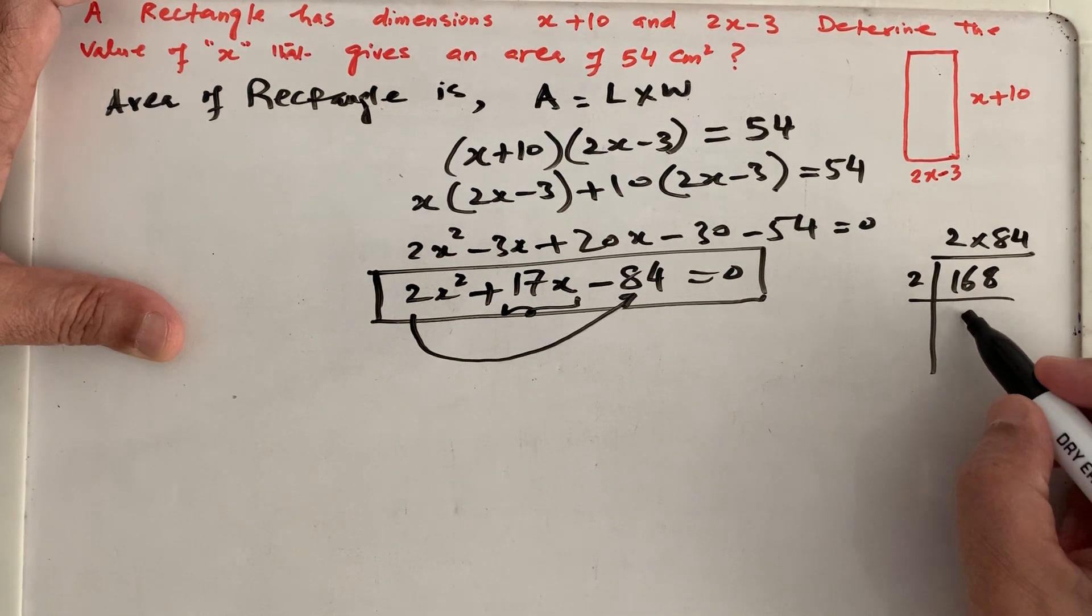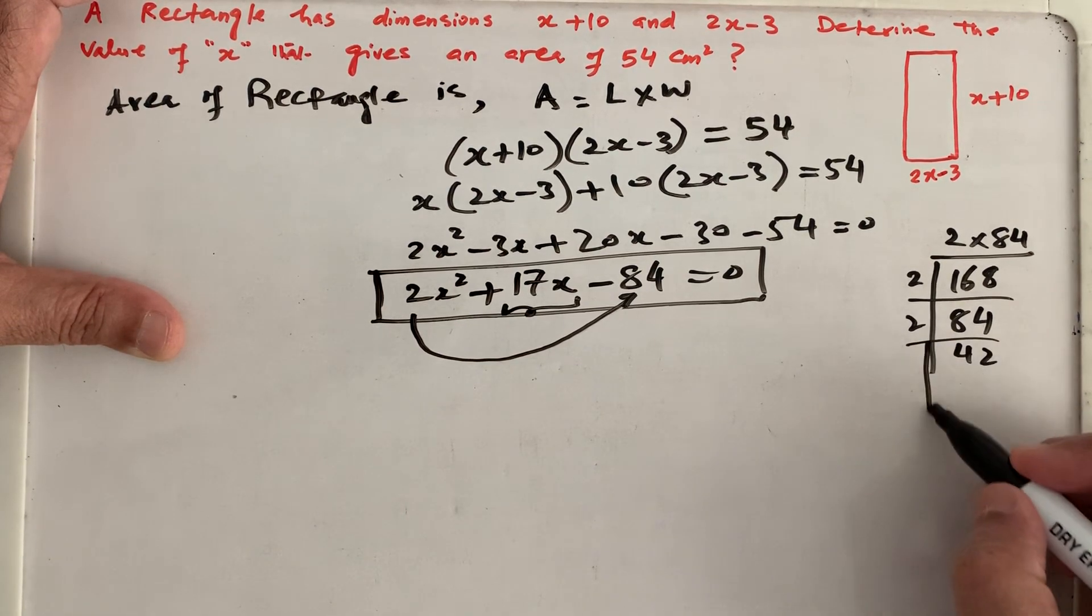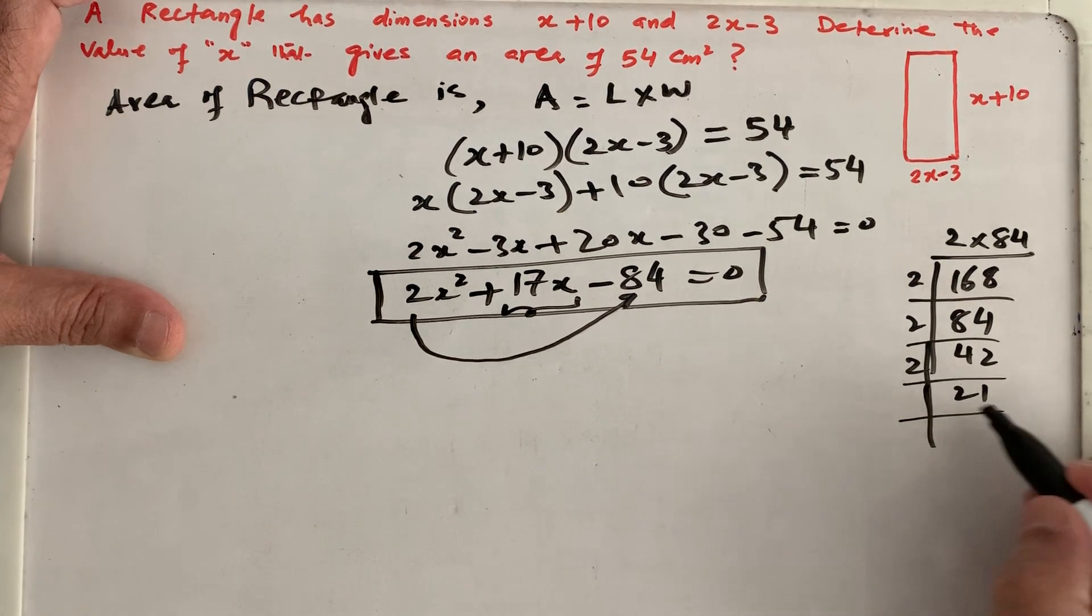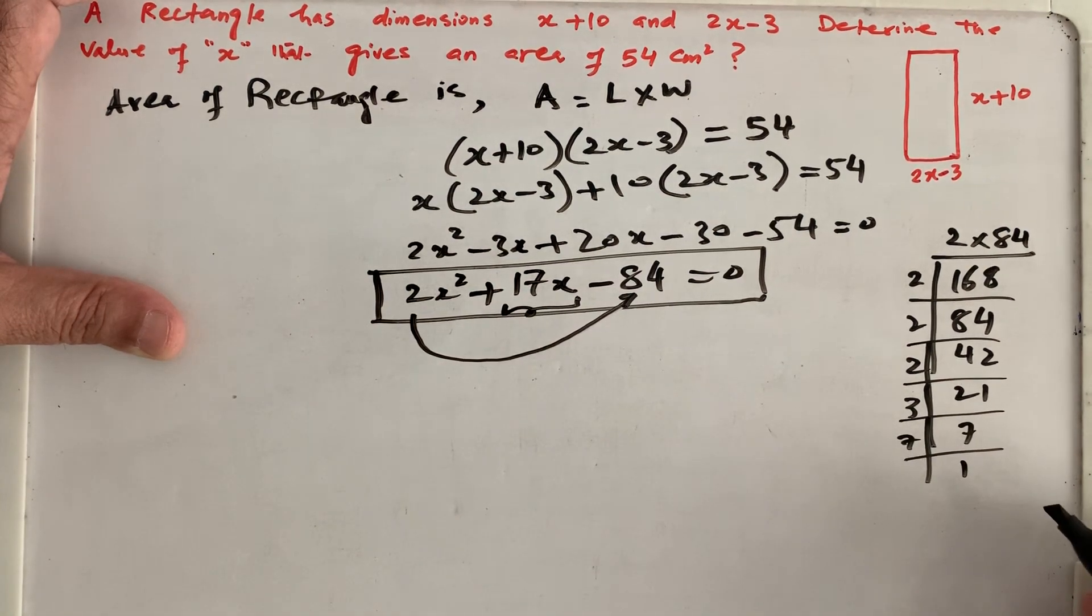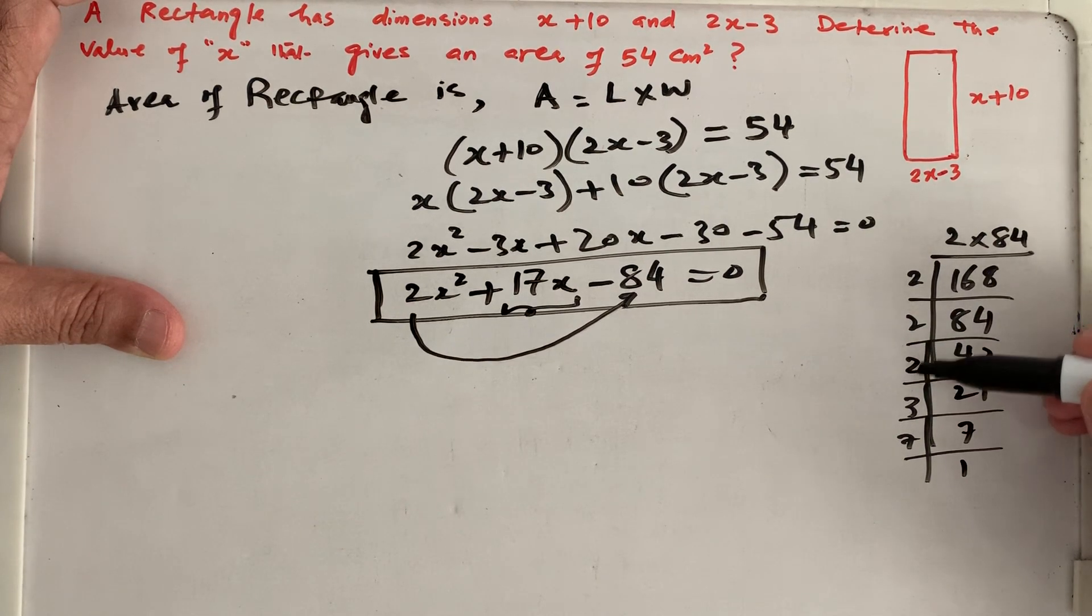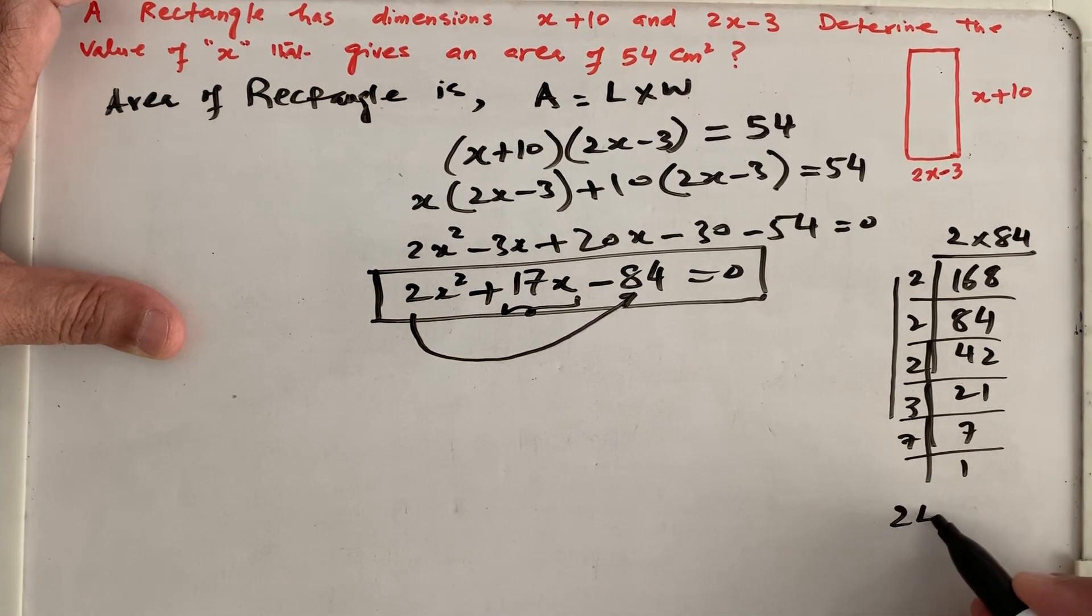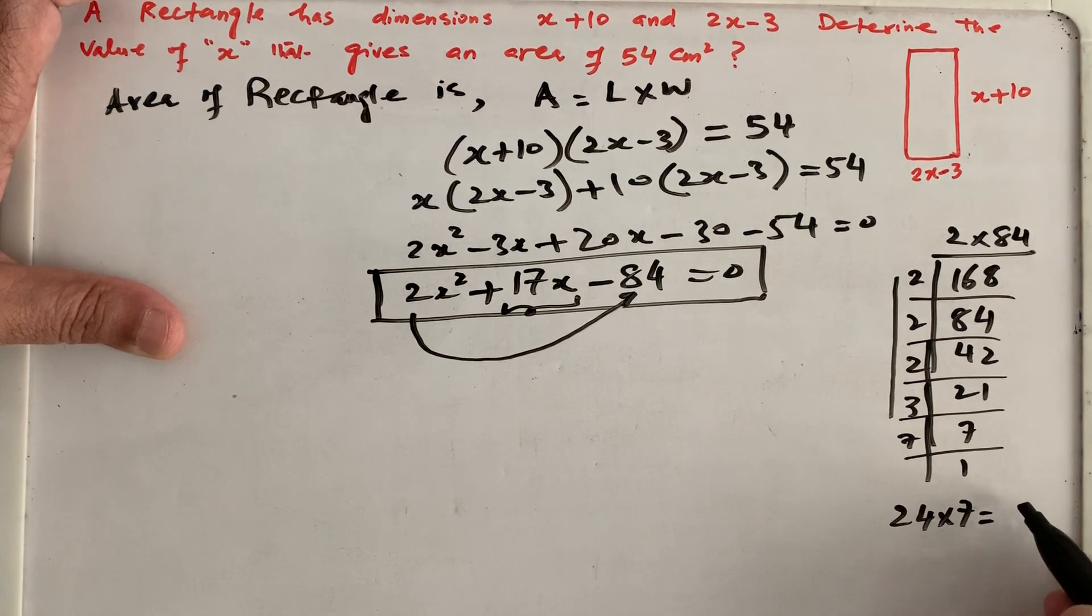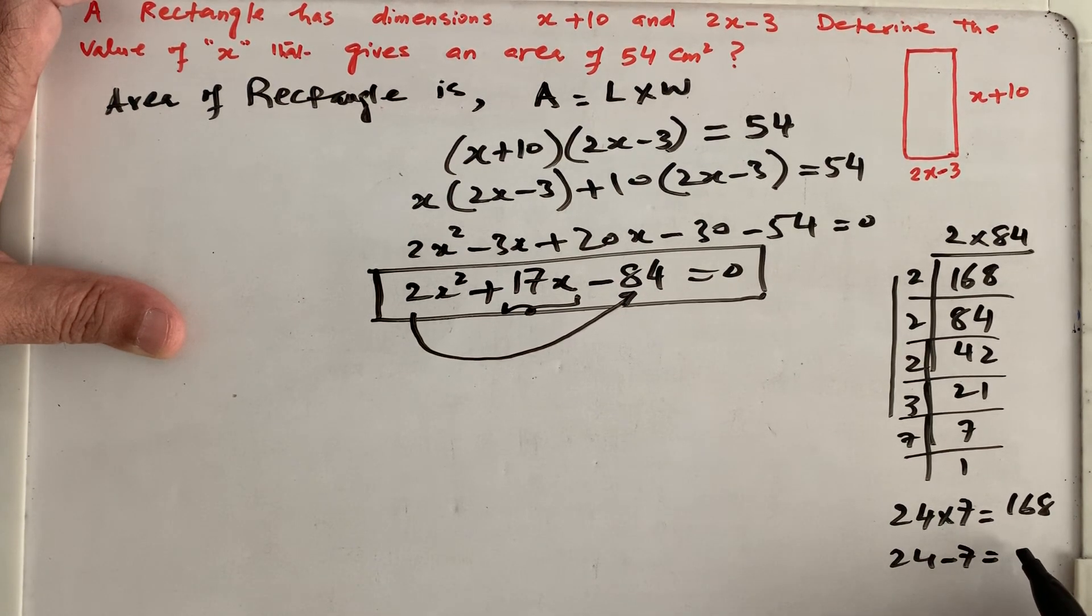So all possible factors are 84, 2, 16, 2, 8, 2, 2 to the 4, 1. And then I can pass 3, 3 7s at 21, and then I can pass 7. So there are few factors. So we can say 2 times 2 times 2 is 8, 8 times 3 is 24. I believe that will work because that is 24 times 7. 24 times 7 is 168. And if we subtract 24 minus 7, that gives me the middle term, 17. So my factors are plus 24 and minus 7.